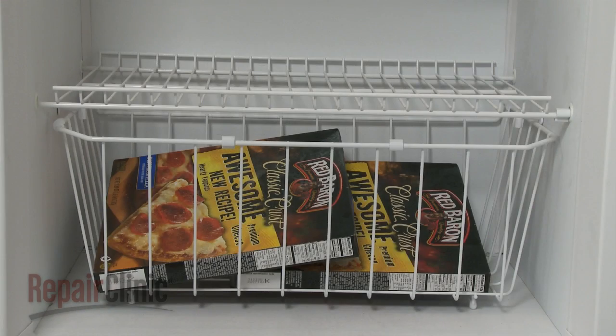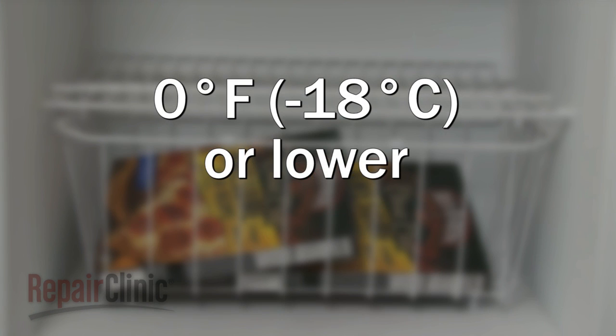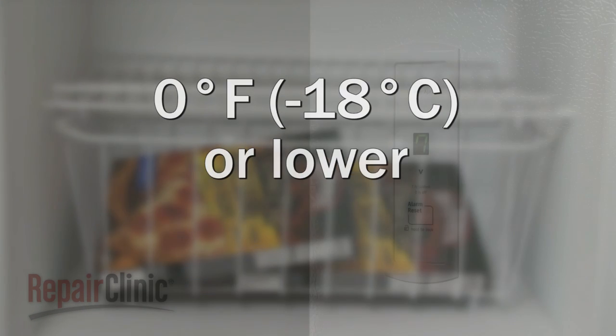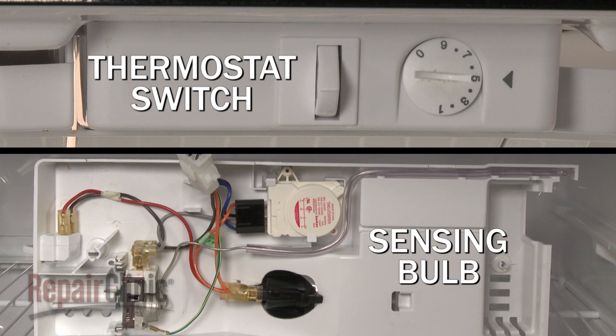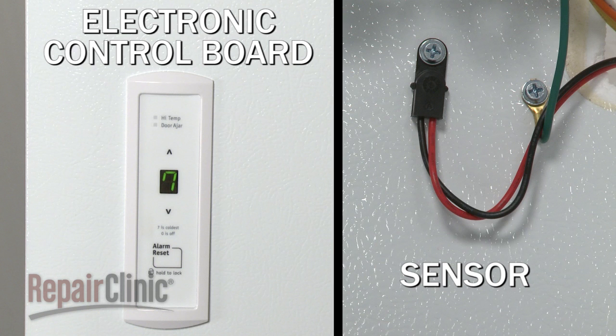The temperature in the freezer should be zero degrees Fahrenheit or lower. The temperature is regulated by the freezer control. Depending on the model, the control may be a thermostat switch and sensing bulb assembly, or an electronic control board that works with one or more sensors.